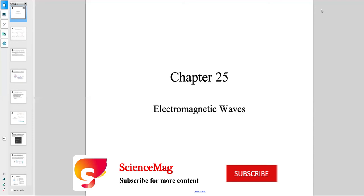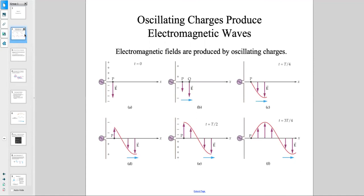Chapter 25: Electromagnetic Waves. Oscillating charges can produce electromagnetic waves. If a charge — either positive or negative — is oscillating around a fixed or moving point, that oscillation can create an electromagnetic wave.